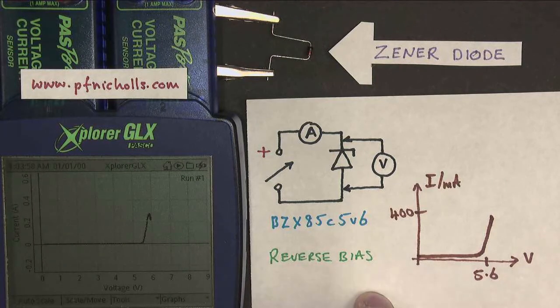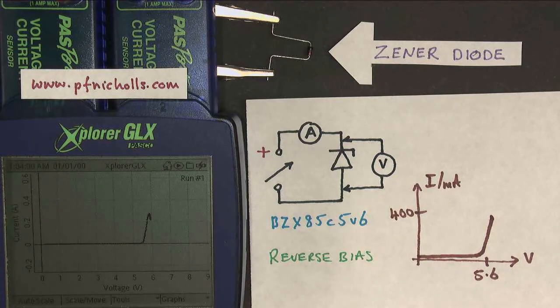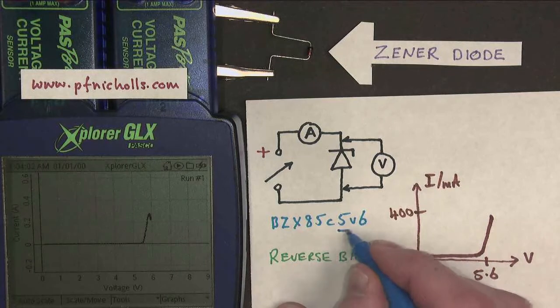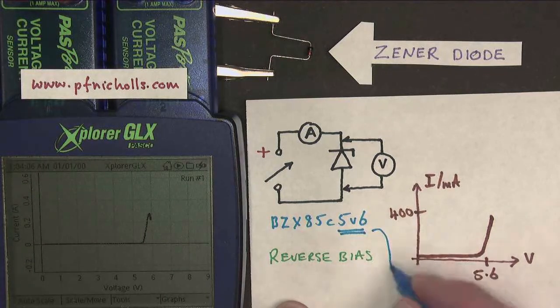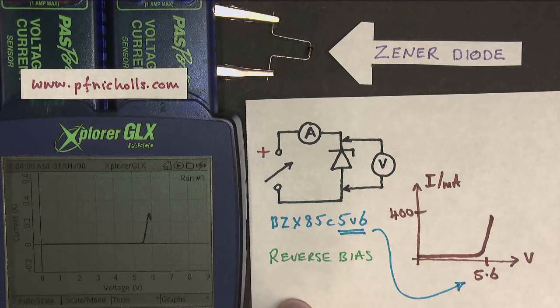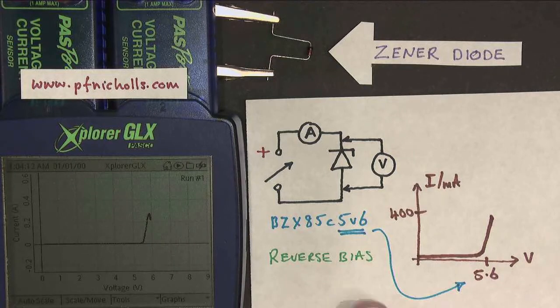Now, I don't know if you can see that in the name of the Zener diode, it has 5V6, which means 5.6 volts. So, a Zener diode is a diode that conducts in reverse bias at a very specific voltage, which is very useful.